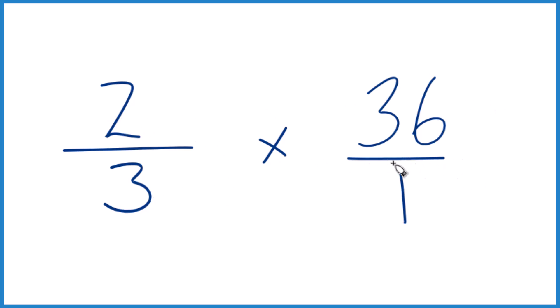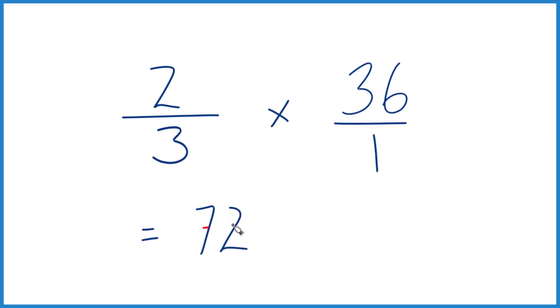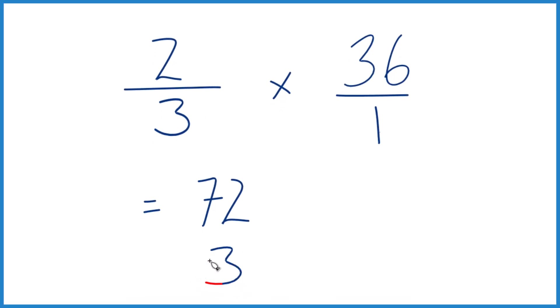Because when we multiply fractions, like two-thirds, we multiply the numerators, then the denominators. Two times 36, that equals 72. And three times one, that equals three.